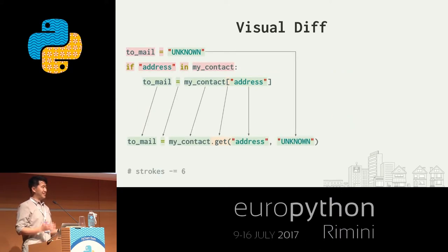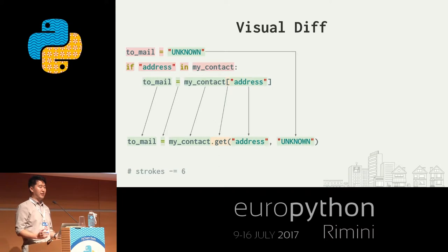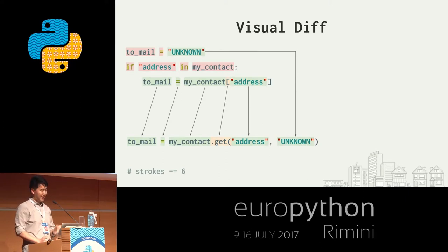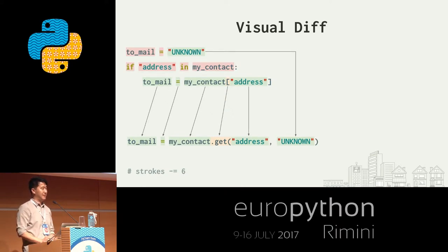For visual learners, the final line is really where the nuts and bolts are. I have `to_mail`, I'm setting it to the address field of the dict `my_contact`. The if-statement is extraneous — it goes away entirely. And the default from the first line, that unknown, gets pulled into the `.get()` call. So visually, this shows where those lines and keywords are going away.